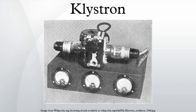The amplified signal is extracted from the catcher cavity through a coaxial cable or waveguide. After passing through the catcher and giving up its energy, the lower-energy electron beam is absorbed by a collector electrode.